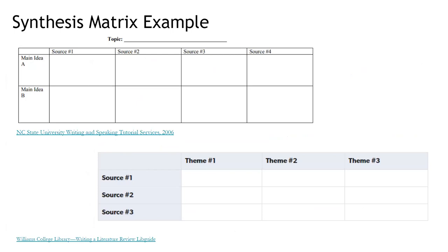Here are two examples of the synthesis matrix I mentioned. You can make this in a spreadsheet or Google Doc. Always write out the specific name of the source so you can keep track of what you're working with, then drop down notes about the main idea or themes you see in each source. Once you've got all of your sources organized using this matrix, you're in a really good position to write your synthesis.